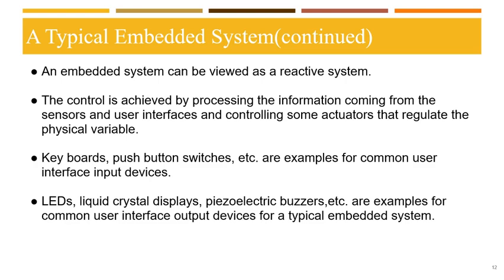Hence, an embedded system can be viewed as a reactive system. The control is achieved by processing information from sensors and user interfaces and controlling actuators that regulate the physical variable. Keyboards and push button switches are examples of common user interface input devices, whereas LEDs, liquid crystal displays, and piezoelectric buzzers are examples of common user interface output devices. It should be noted that not all embedded systems need to incorporate these I/O user interfaces.